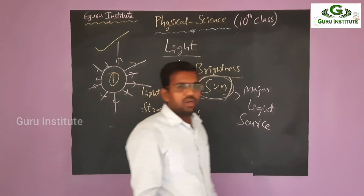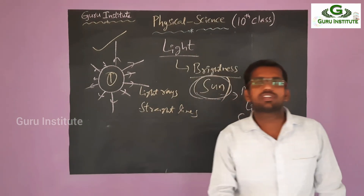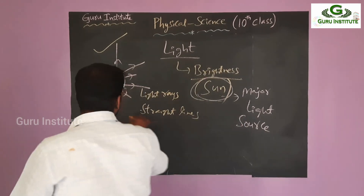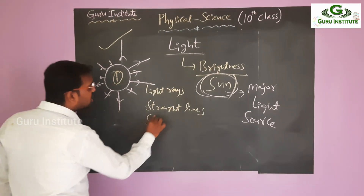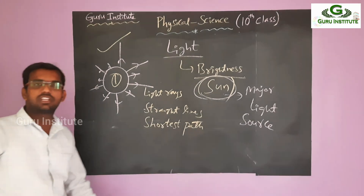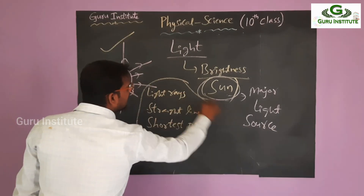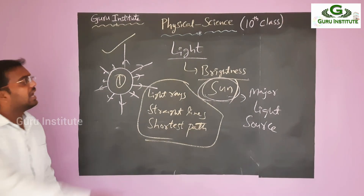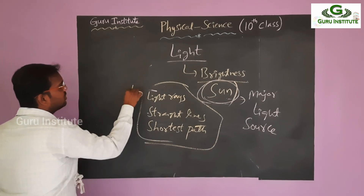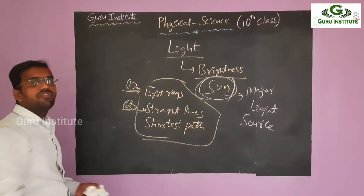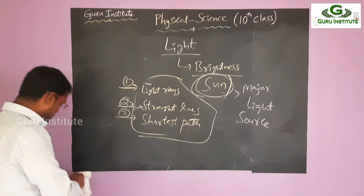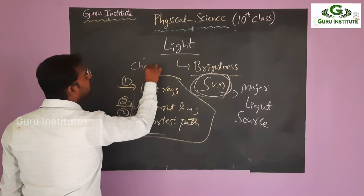After sunrise in the early morning, you are getting light very fast — not slowly. Obviously light is very fast in nature, so it travels at a high speed. And it takes the shortest distance path. These are the basic natures of light rays. What are those? First: light is in the form of rays. Second: it is always in the form of a straight line. Third: it always takes the shortest path. These three are the basic characteristics of light.